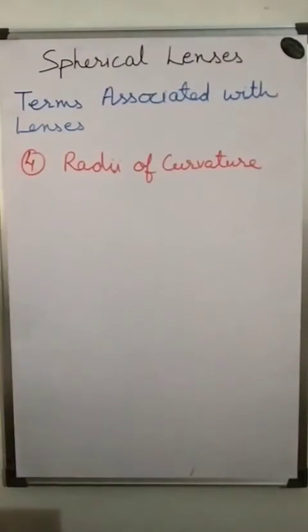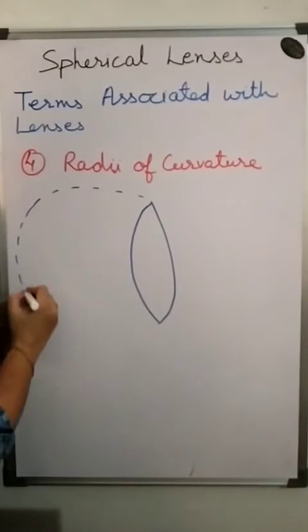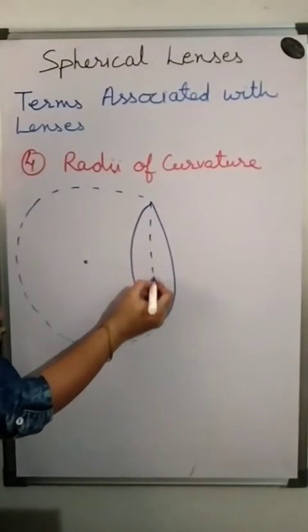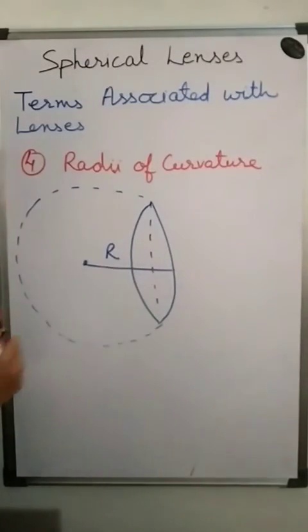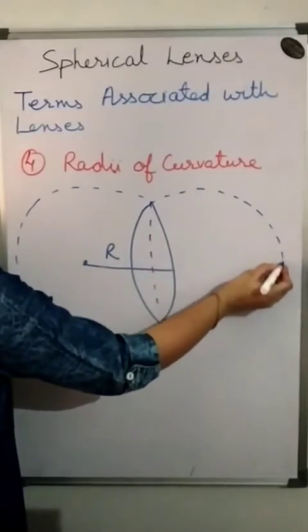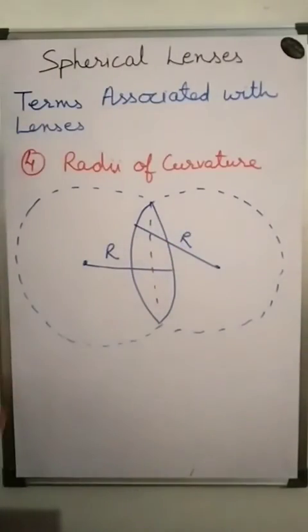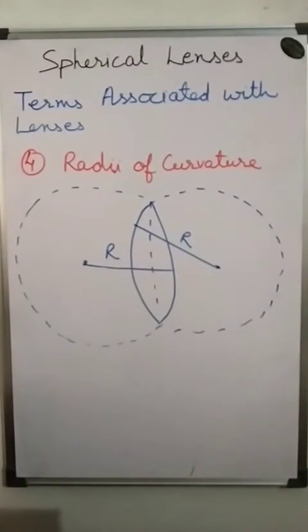Now, radii of curvature. For a convex lens, completing the circle gives the center of curvature. The distance from the lens surface to the center of curvature is called the radius of curvature. Each side has its own radius. For symmetrical lenses, the radii are equal on both sides, so there is only a single radius of curvature.